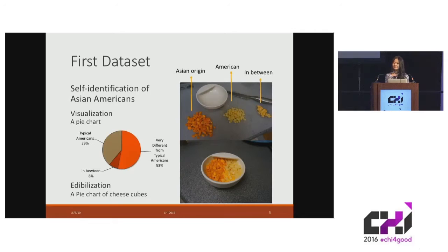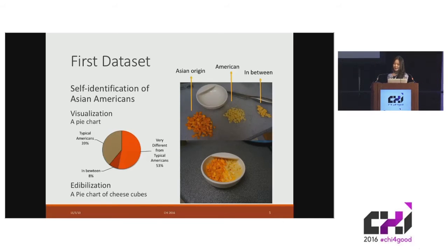The first data set is about how Asian Americans identify themselves. We used cheese with different flavors and colors to represent whether they consider themselves as a typical American, a very different American, or in between. We found our participants from Asian countries liked the flavor representing Asian origins better.